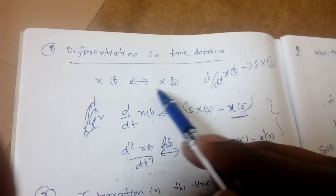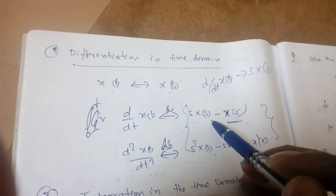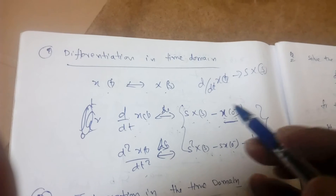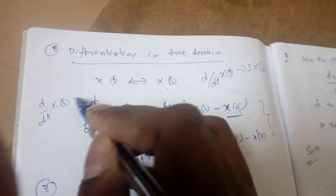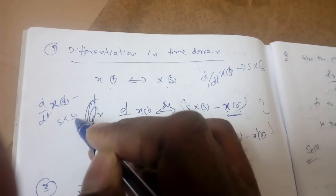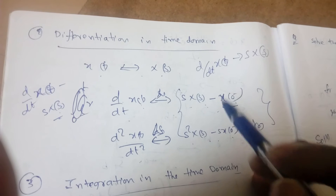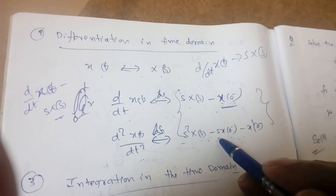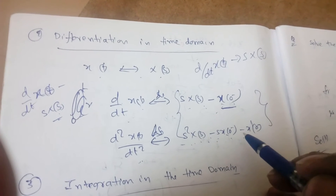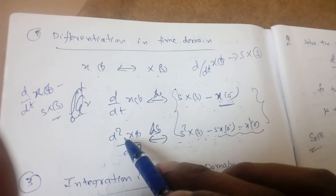Two more properties: differentiation in the time domain. If x(t) has Laplace transform X(s), then d/dt of x(t) gives s·X(s) minus x(0⁻). This is different from the bilateral case, where d/dt of x(t) gives only s·X(s) without the minus x(0⁻) term. For the second derivative, d²x/dt² gives s²·X(s) minus s·x(0⁻) minus x'(0⁻), yielding two initial conditions.